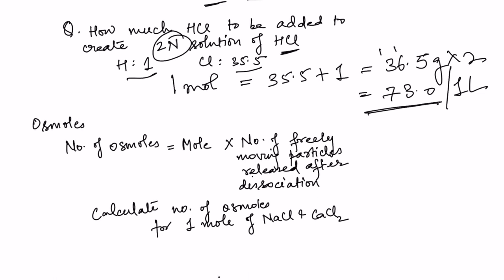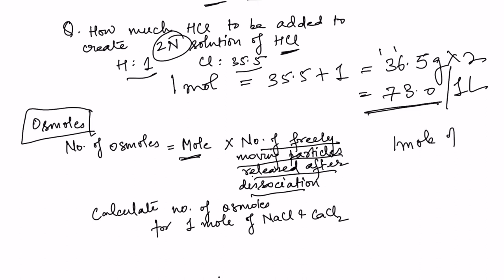Next concept: osmoles. Osmoles is the number of moles multiplied by the number of freely moving particles released after dissociation. For 1 mole of NaCl, when NaCl dissociates it gives sodium and chloride — 2 particles. So 1 mole of NaCl is releasing 2 particles, which equals 2 osmoles.